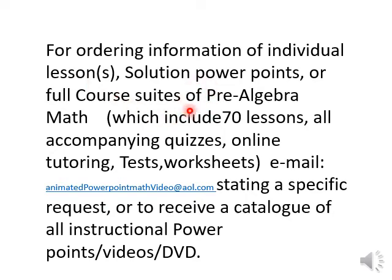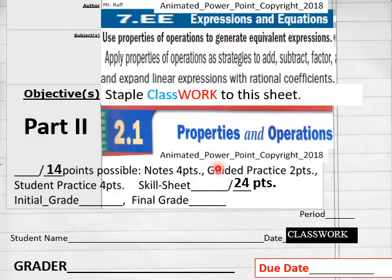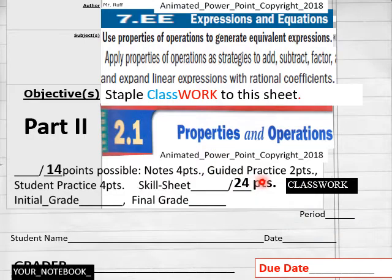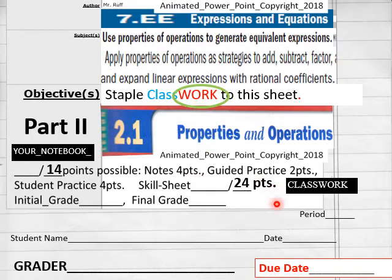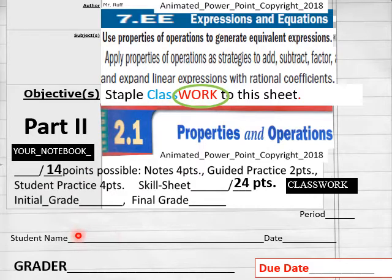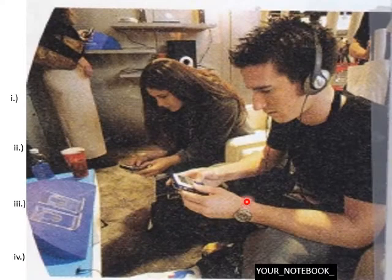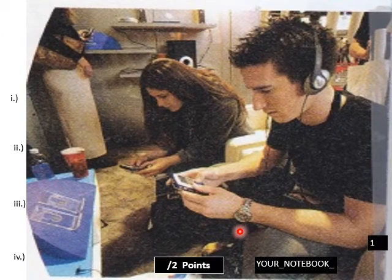Hello everybody, getting ready to do Lesson 2.1 Part Two today of pre-algebra math. On your classwork sheet you have 24 points — have that out in front of you. 14 points go into your notebook or notebook guide. Have that ready to go. Students, put your name, date, and period here.